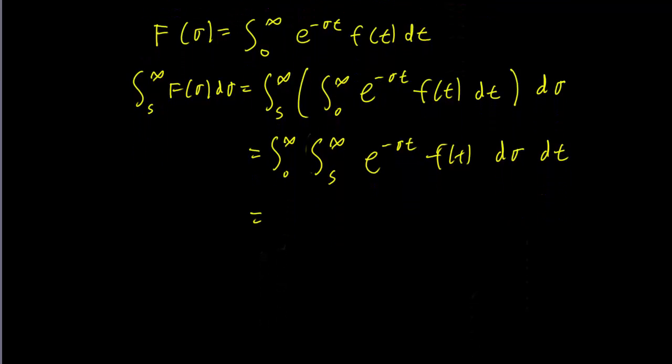So with the order of integration switched, we can do the inner integral first. So this ft is a constant, we don't have to worry about that. And sigma is the variable we're integrating over, so t is a constant, which means the integral is going to be e minus sigma t over minus t. So ft is a constant, we just leave it here. And this goes from sigma equals s to infinity dt.